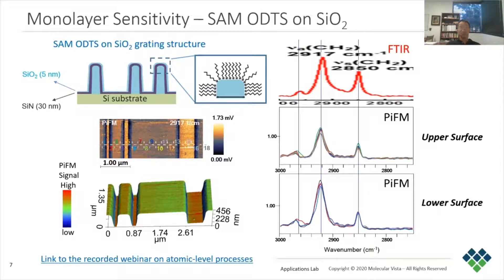We demonstrate the excellent PIFM sensitivity by characterizing the self-assembled monolayer film of octadecyltrichlorosilane (ODTS) formed on a silicon dioxide substrate. The substrate is a linear grating with varying width and spacing to test the effect of geometry on the packing density of the SAM layer. The structure is coated with 30 nanometers of silicon nitride and 5 nanometers of silicon dioxide, on top of which the SAM is formed.